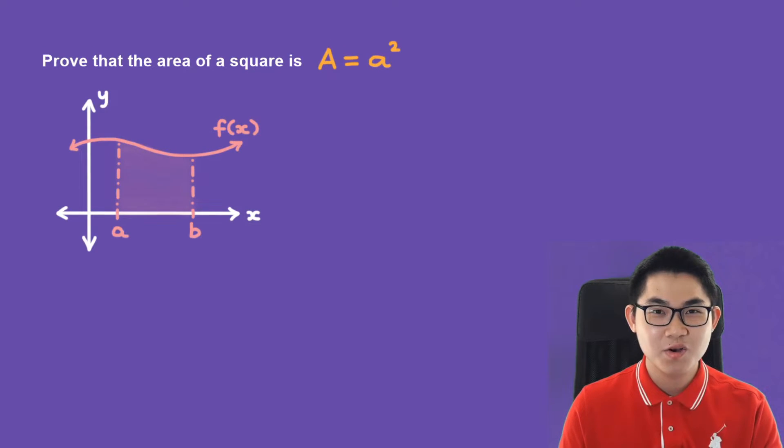So in calculus there is a formula that allows us to find the area under any curve. Let's say we have this curve here or this function f of x and we want to find the area from a to b on the x-axis. The formula is going to be A equals the integral from a to b of f of x dx.